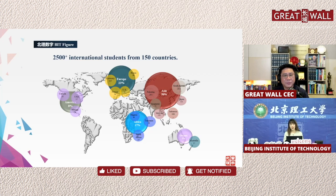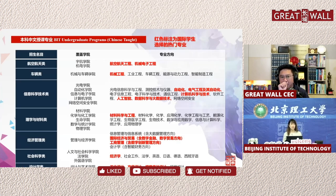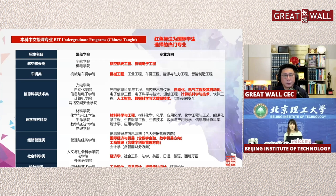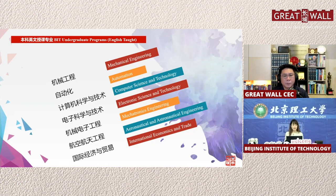Let's check our majors. At the undergraduate level, we have Chinese-taught majors — if you can pass HSK5, you can apply to all Chinese-taught majors. For English-taught majors, we have mechanical engineering, automation, computer science and technology, electronic engineering, aerospace engineering, and international economy and trade. All these majors can be taught in English, with papers, dissertations, essays, and homework entirely in English.